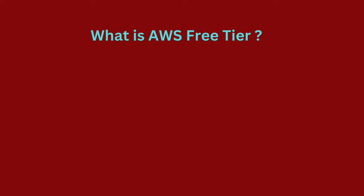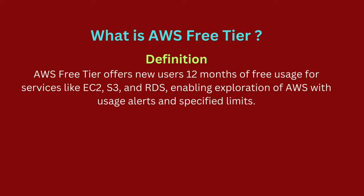AWS Free Tier enables new users to access AWS services like EC2, S3, and RDS for free for 12 months. Some services are always free, while others offer temporary trials. It allows beginners to explore AWS without upfront cost, up to specified limits. After the free period, standard rates apply, with usage alerts to track consumption.